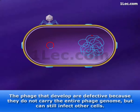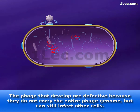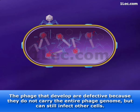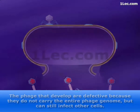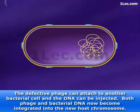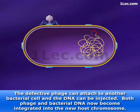The phage that develop are defective because they do not carry the entire phage genome, but can still infect other cells. The defective phage can attach to another bacterial cell and the DNA can be injected. Both phage and bacterial DNA now become integrated into the new host chromosome.